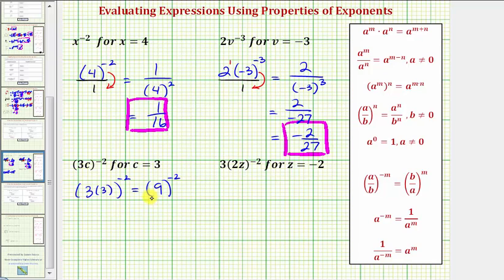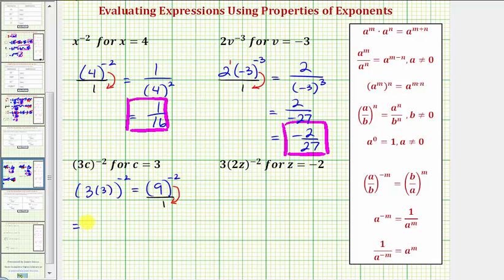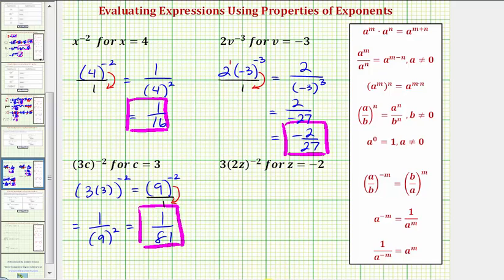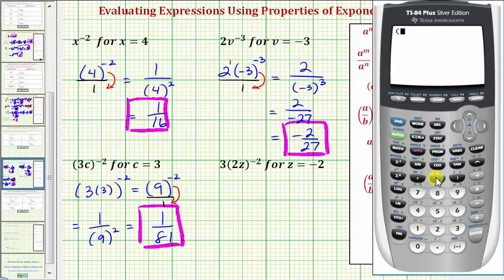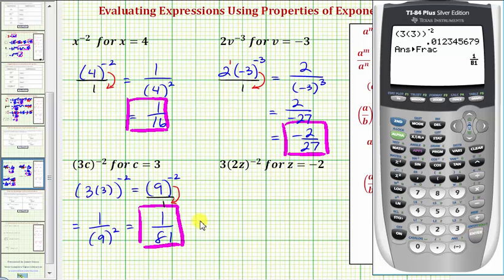Writing this with a positive exponent, we can create a fraction with a denominator of one. We'll move nine to the power of negative two down to the denominator, which will change the sign of the exponent. This is equal to one over nine raised to the power of positive two, or nine squared. Nine times nine is equal to 81, so we have one over 81 for the value of our expression. Checking on the calculator: open parenthesis, three times three, and all this is raised to the power of negative two, enter, and math, enter, enter, again verifying our answer.